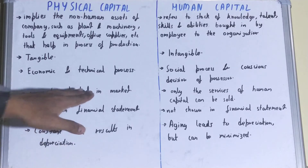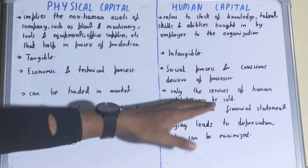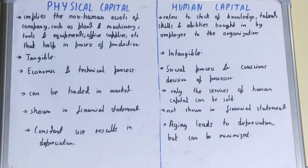Next, if we talk about tradability, physical capital can be traded in the market — you can trade physical capital by going to the market and buying it. But for human capital, only the services of the human capital can be sold.